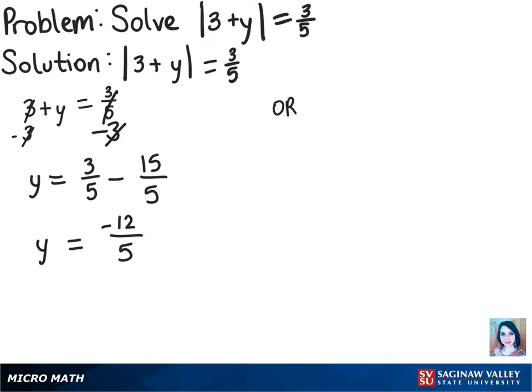Now for the other side, we'll have three plus y equals negative three-fifths. We'll solve it the same way. We subtract three from both sides, and we already know from before we get negative fifteen over five. When we subtract that from negative three-fifths, we get y equals negative eighteen-fifths.